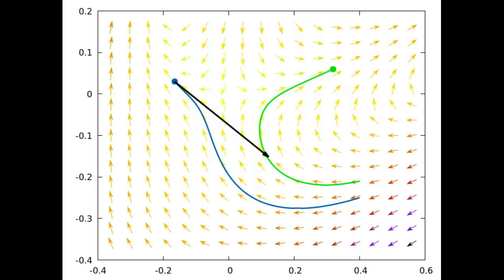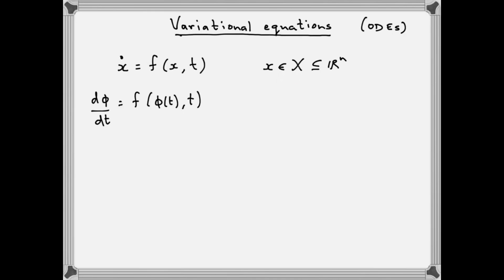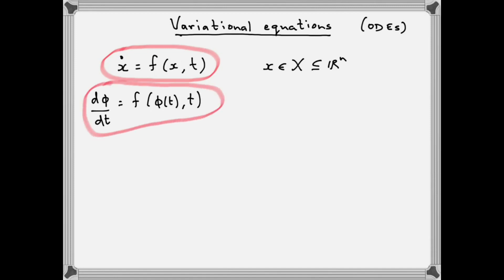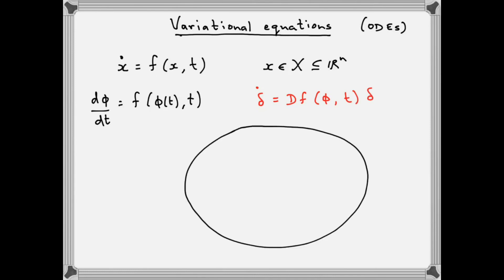Now let's try to give an interpretation to the variational equation as a precise differential equation, rather than as an approximate one. We have our original differential equation, x-dot equals f(x, t), and our solution phi which satisfies this differential equation. Additionally we have the variational equation: delta-dot equals Df(phi, t) applied to delta. Let's draw our state space, initial condition, and trajectory again — this is the trajectory corresponding to the solution phi.